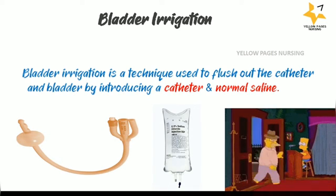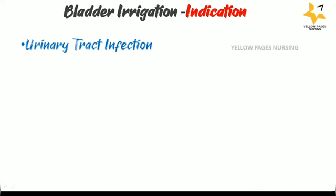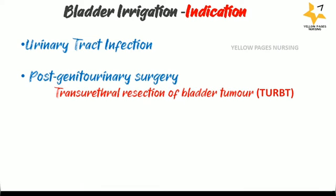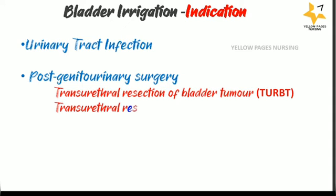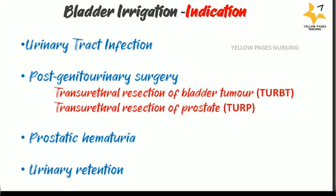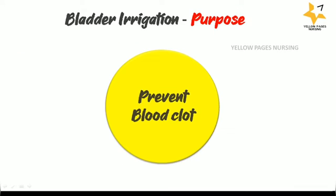When is bladder irrigation needed? The indications include urinary tract infections, post genitourinary surgery such as transurethral resection of bladder tumour (TURBT), transurethral resection of prostate (TURP), hematuria, and urinary retention.